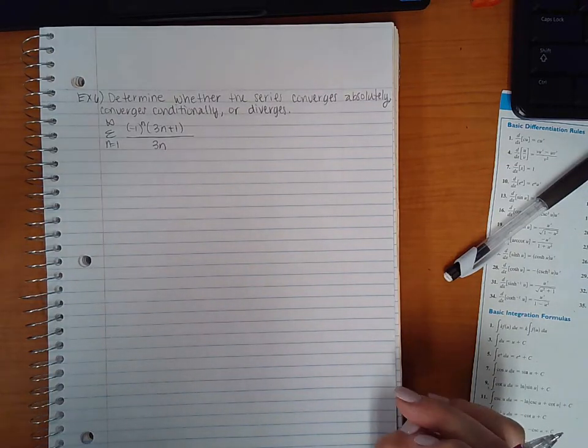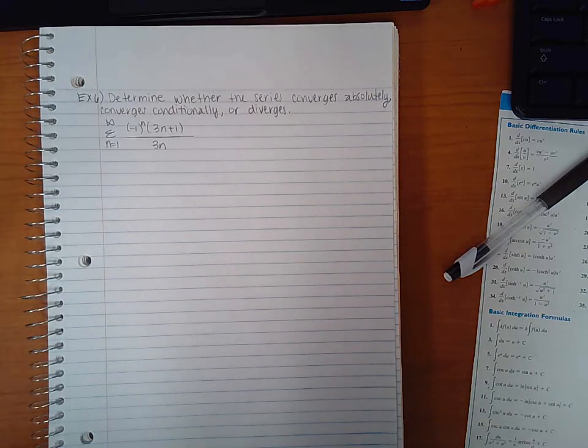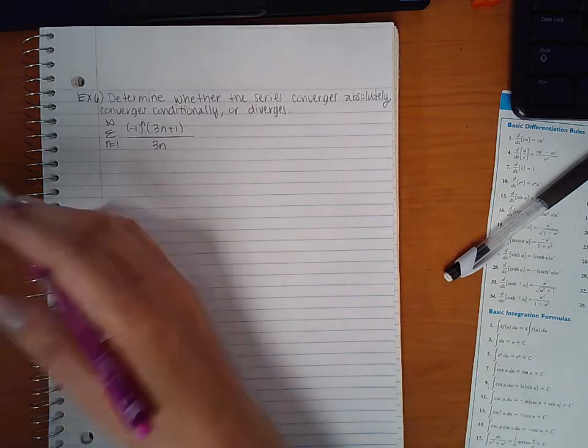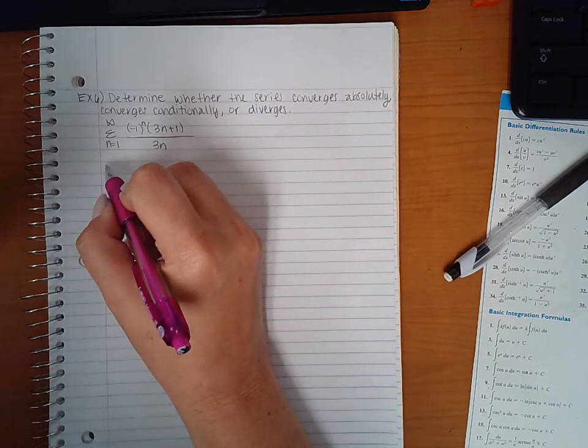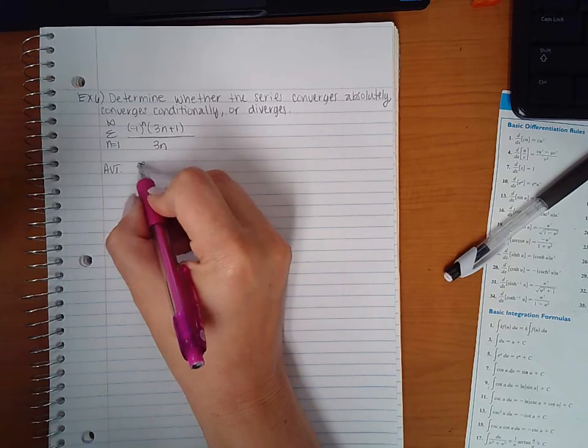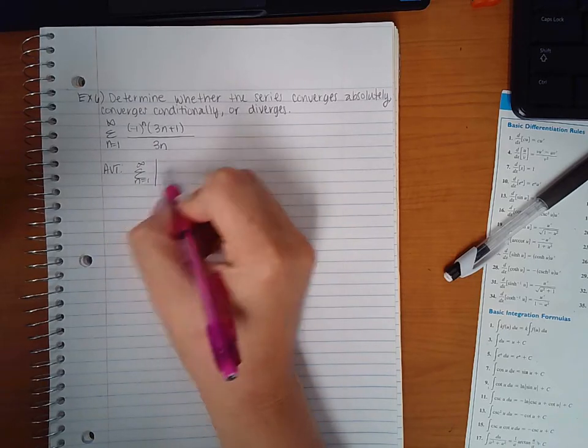Here we have example 6 from section 9.5. So we have to take the absolute value test. Absolute value test, which means we're going to take the absolute value of our original series.